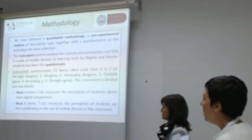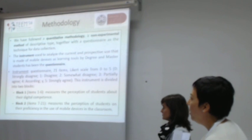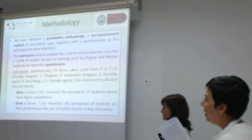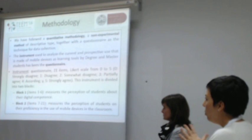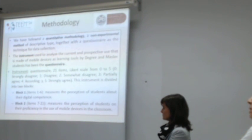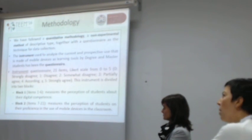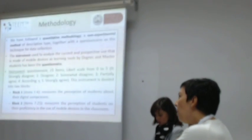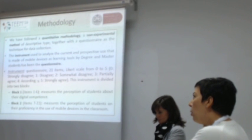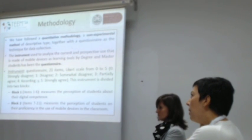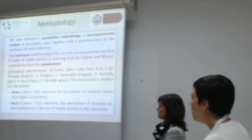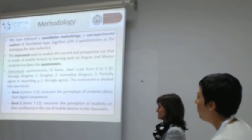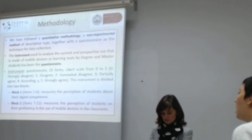This instrument is divided into two blocks. In Block 1, items 1 to 6, it stores the perception of the students about their critical competence. In Block 2, items 7 to 21, this covers the perception of the students on their proficiency in the use of mobile devices in the classroom.